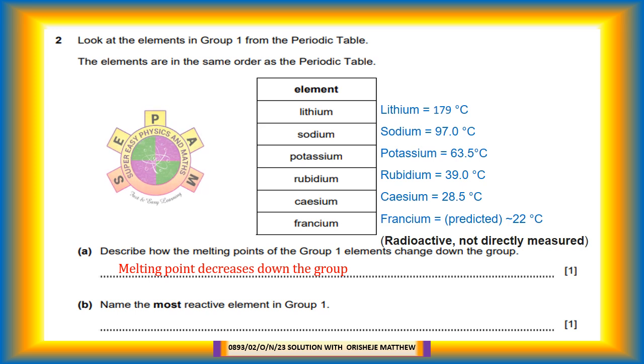Question 2b: Name the most reactive element in group 1. The most reactive element is francium. The size of the atom increases down the group and the elements down the group readily lose the outermost shell electrons and have lower ionization energy.